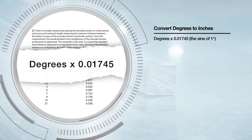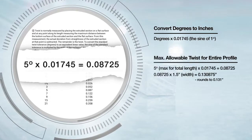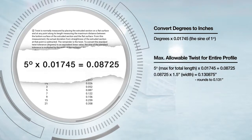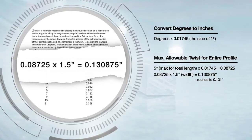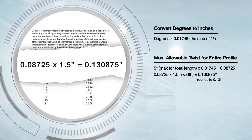To find the maximum allowable twist over the entire profile, you will multiply five degrees times 0.01745 to get 0.08725. Then multiply that times the one and a half inch width, which equals 0.130875.